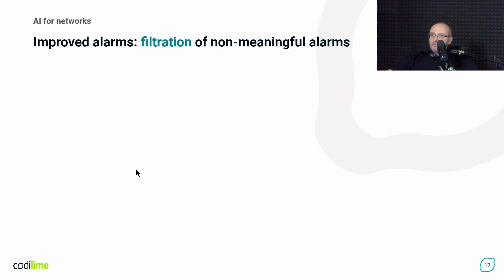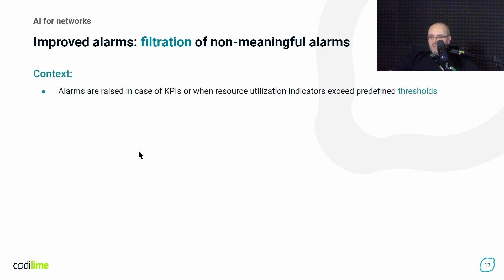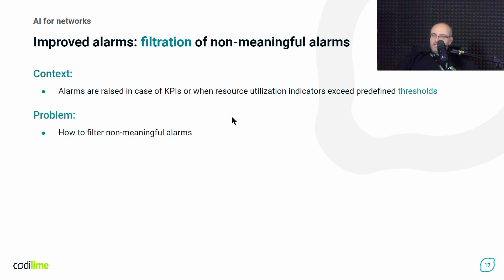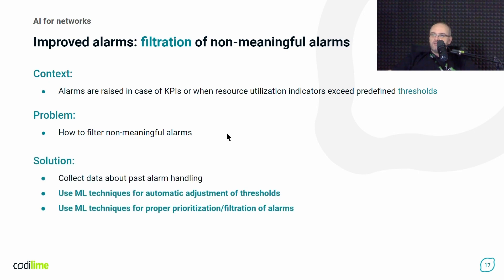That is one use case. In another use case, I would like to focus on filtration of non-meaningful alarms. As I mentioned in episode one, we can measure resource utilization as well as KPIs on our services. Usually, in order to determine that something wrong is happening, we define thresholds, and if a particular metric crosses those thresholds, we want to be alerted. However, setting the right threshold level is not an easy task, and very often improperly set thresholds cause alerts that are not meaningful — not very serious in our environment — yet we spend time handling them.